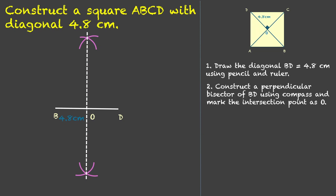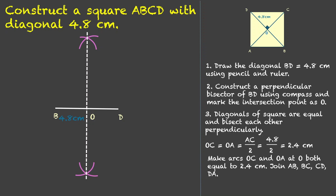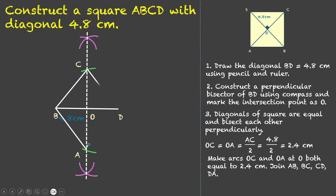The same process follows: since the diagonals of a square are equal and bisect each other, if BD is 4.8, then AC is 4.8 as well. AO is half of AC, so half of 4.8 is 2.4. We open our compass to a length of 2.4, keep it at O, and make two arcs — one above, which will be point C, and one below, which will be point A — both 2.4 cm each. Finally, we join AB, BC, CD, and DA to get the required square ABCD.